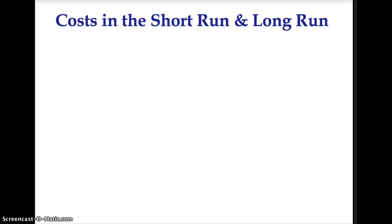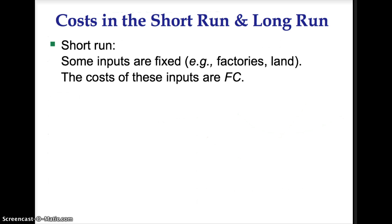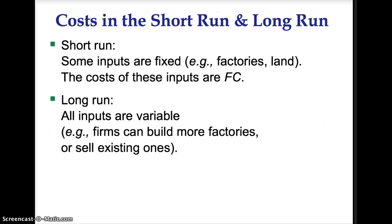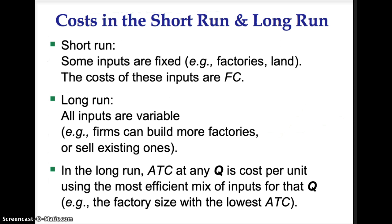Costs are different in the short run compared to the long run. The short run is a period of time in which some inputs are fixed, like the size of the factory or the amount of land a firm has. The cost of these inputs are fixed costs. The long run is a period of time in which all inputs are variable, meaning the firm can build more factories, sell existing ones, or purchase more land. There is not a fixed length of calendar time associated with the short run and the long run. The transition from the short run to the long run differs from firm to firm. In the long run, average total cost of any quantity is the cost per unit using the most efficient mix of inputs.